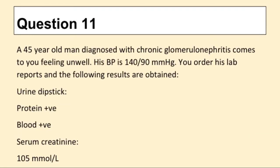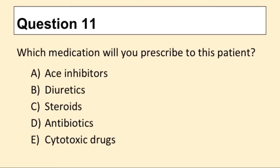Question 11. A 45-year-old man diagnosed with chronic glomerulonephritis comes to you feeling unwell. His blood pressure is 140/90. You order his lab reports and the following results are obtained. Which medication will you prescribe to this patient?